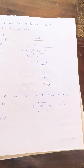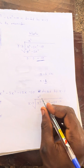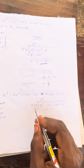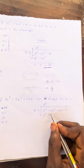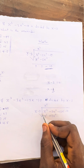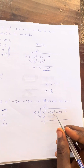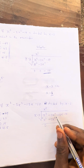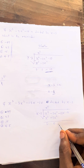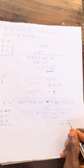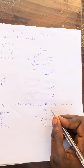We are dividing x cubed minus 3x squared minus 13x minus 10 by x minus 3. Dividing x cubed by x gives us x squared. Use x squared to multiply the two terms: x squared times x is x cubed, and x squared times minus 3 is minus 3x squared. After subtracting, x cubed minus x cubed is 0, and minus 3x squared minus (minus 3x squared) is also 0. The remainder here is minus 13x minus 10.